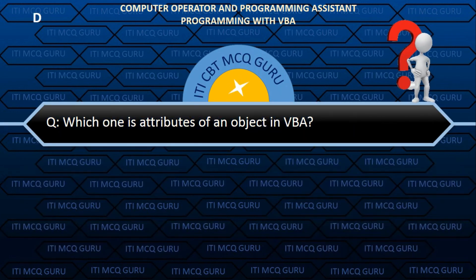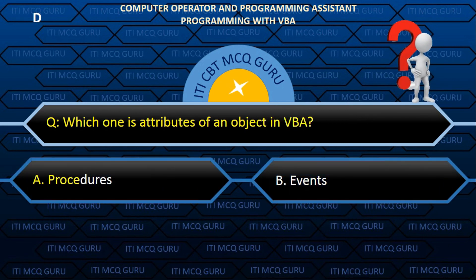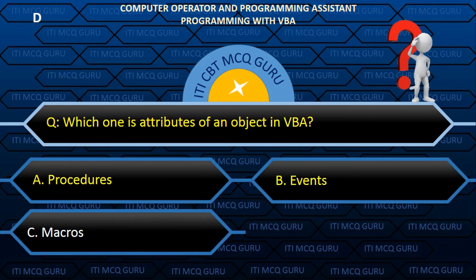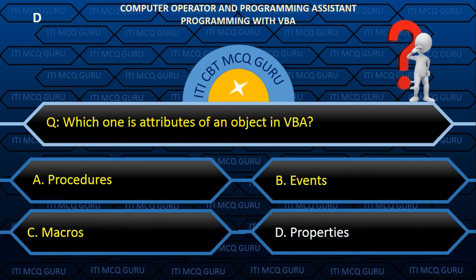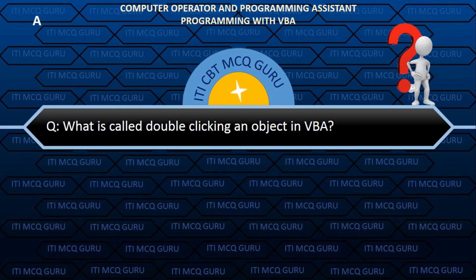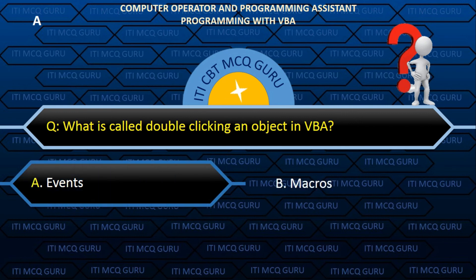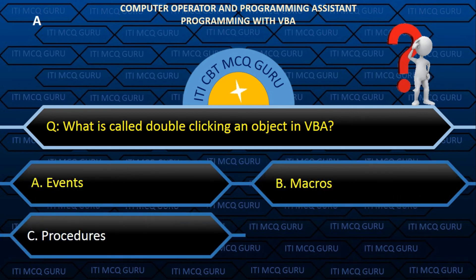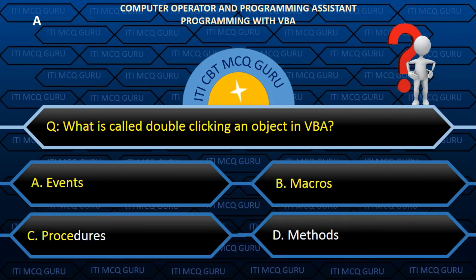Which one is an attribute of an object in VBA? Answer: A. Events.